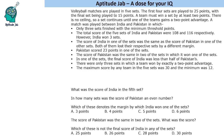Volleyball matches are played in 5 sets and the first 4 sets are played to 25 points, with the final set being played to 15 points. The condition is that a team must win a set by at least 2 points — that is called a 2-point advantage. If the game goes beyond the threshold, it is won until one team gets a 2-point advantage.